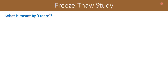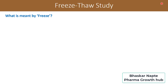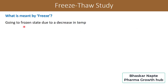So we will talk about what is meant by freeze-thaw, when this study has to be conducted, how this study has to be conducted, what the protocol looks like, and there are many interesting facts we are going to reveal as part of this video. Let us first understand the definition of the words freeze and thaw. Freezing means going to a frozen state due to a decrease in temperature. For example, if you decrease the temperature of water, the water goes from liquid state to solid state — ice — and this occurs because of the decrease in temperature.